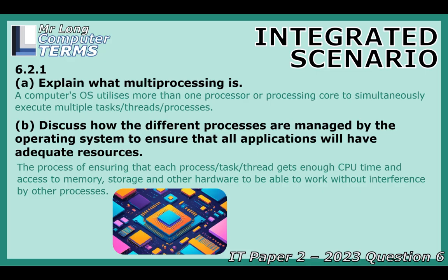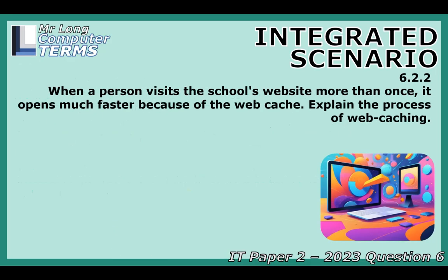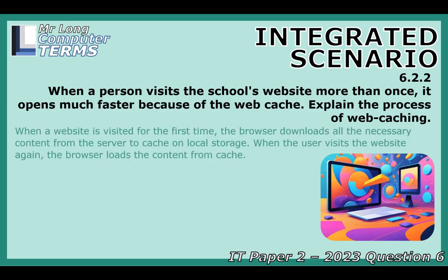Why does a website often load way faster the second time you visit it? The answer is web caching. The first time you visit a site, your browser downloads everything — text, images, the code — from the website's server. Caching means your browser keeps a temporary copy of some of those downloaded elements, like images and style sheets, on your own device. Next time you visit, the browser loads them from your local cache instead of fetching them from the server again. Much faster — like a browser shortcut for sites you visit a lot.